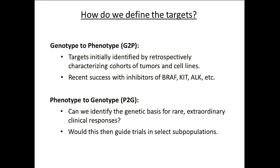That's the typical approach, and that's not what I'm going to talk about for the first ten minutes of this talk. I'm going to talk about the opposite — what we call the extraordinary responder approach or N-of-1 initiative. This is where we take patients who have already had a response, and we try to figure out what made them genetically unique.